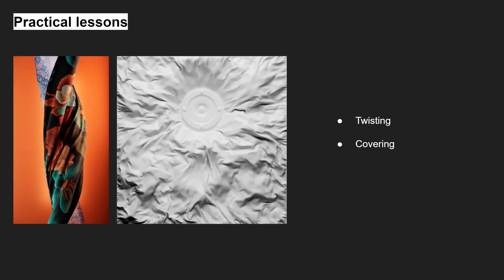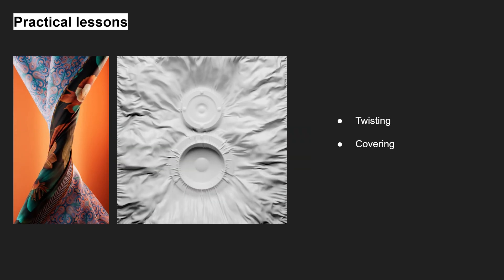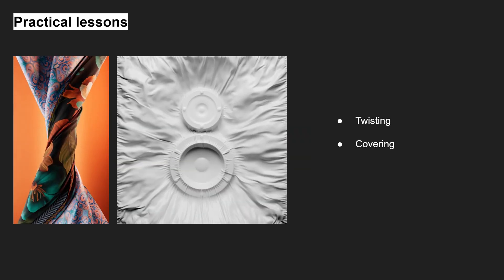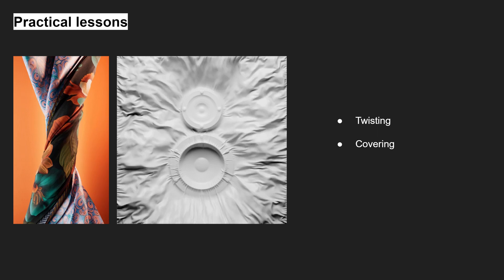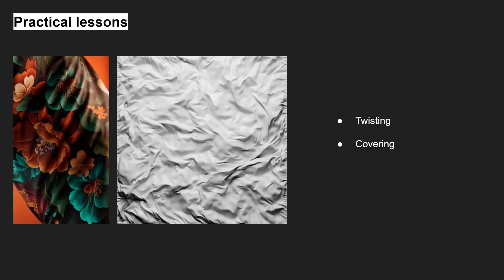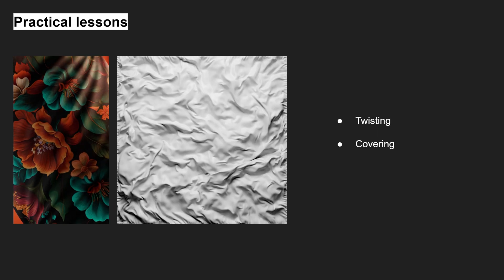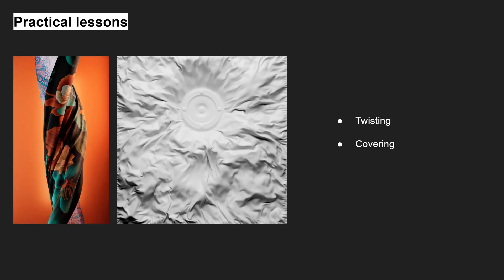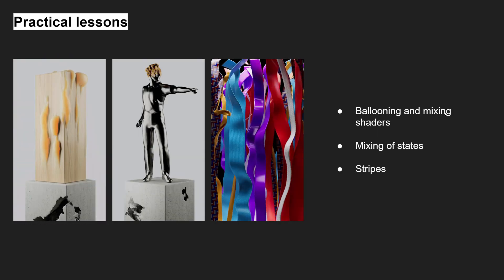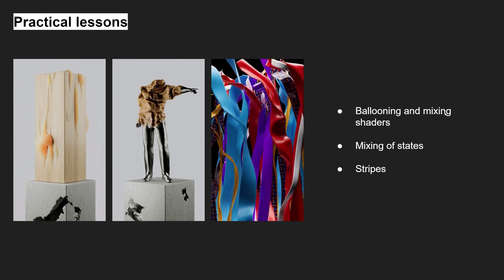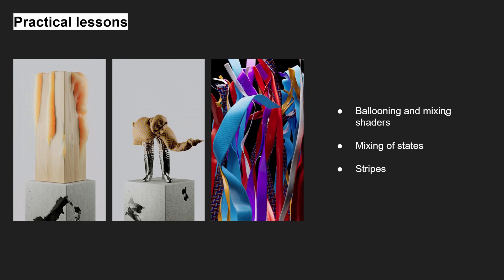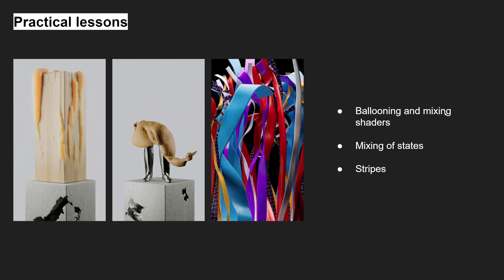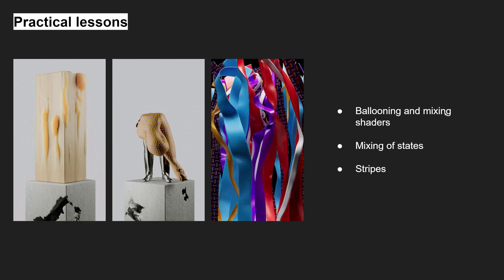Twisting multiplier fabrics without converting them to editable meshes is now possible. Covering can be controlled with forces and maps, allowing for more precise zone control. Ballooning and mixing shaders are now easy to achieve with maps.